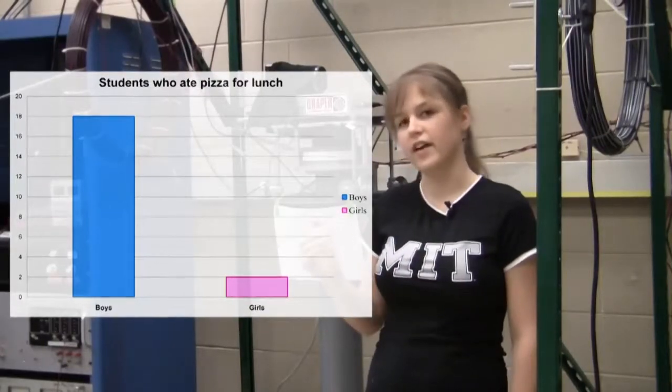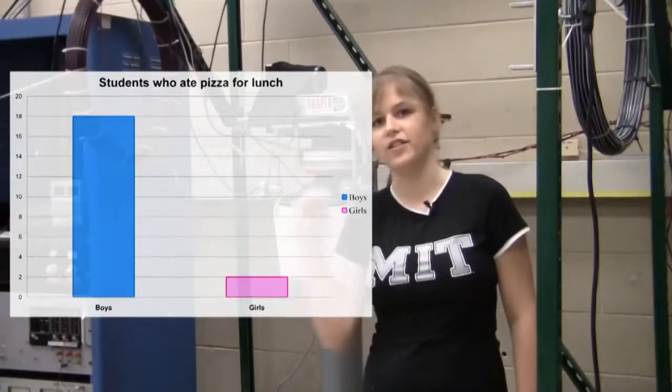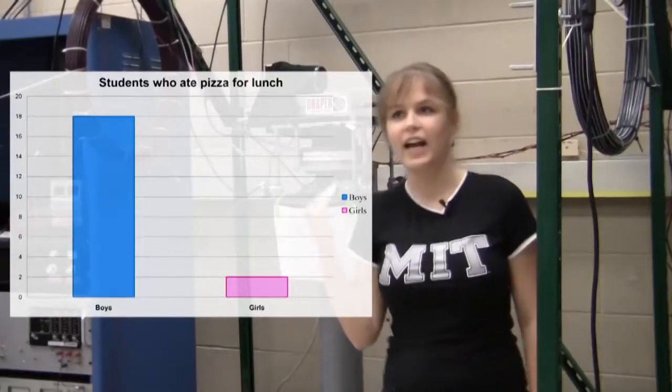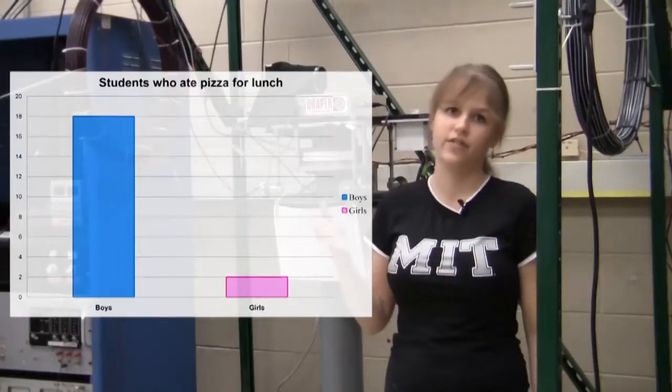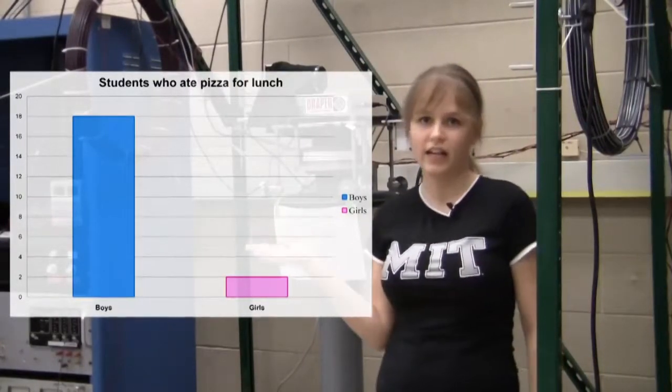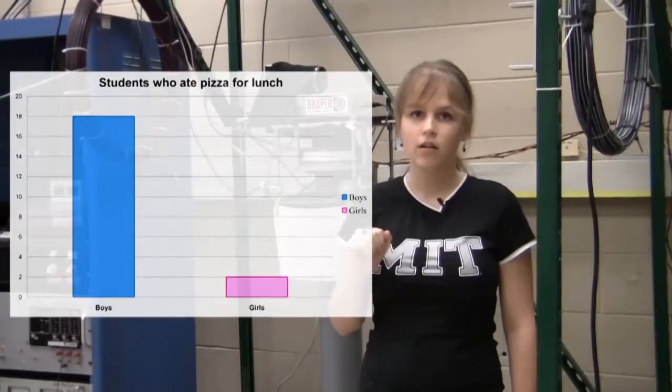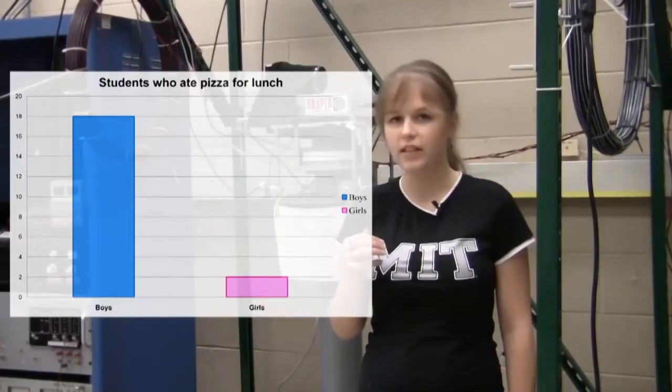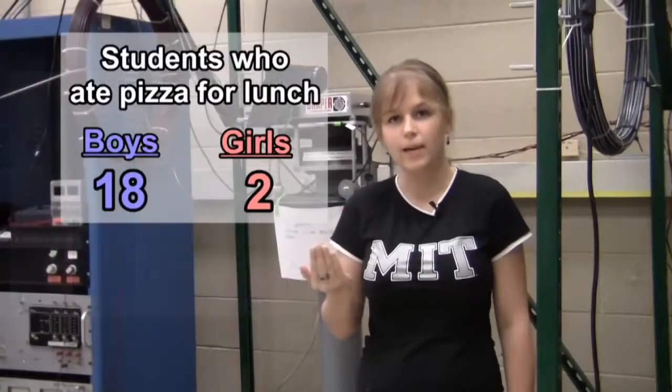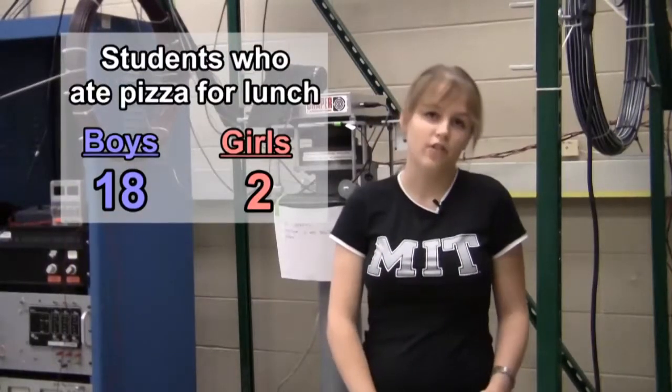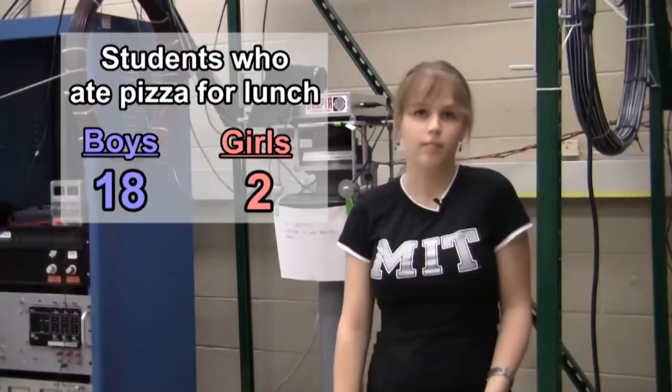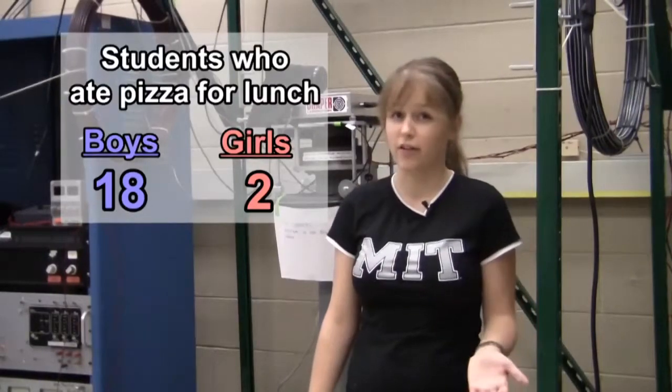Consider carefully whether or not a bar chart might not be a better representation of your data. A bar chart allows you to have that same relative magnitude comparison while allowing you to add extra data, such as the fact that those 90% boys were actually 18 in number. Or, you know, consider whether or not you might just use a simple table for your data. After all, when you don't have all that much data, sometimes explicit numbers speak louder than bars.